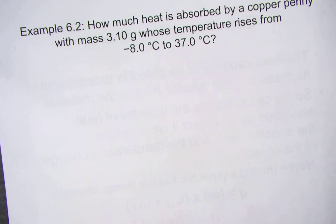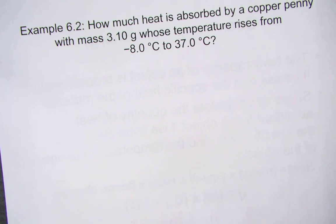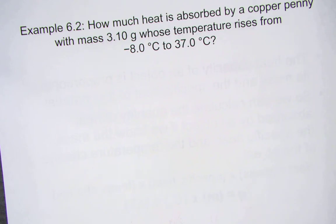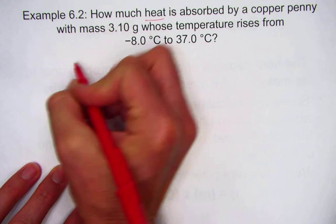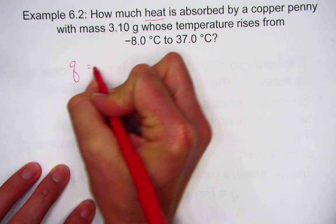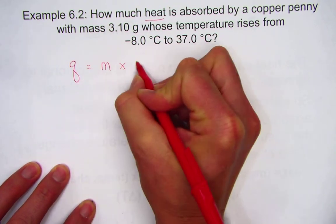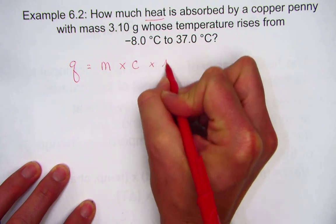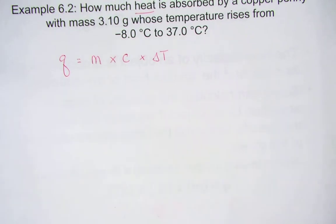Let's take a peek at an example problem. How much heat is absorbed by a copper penny with a mass of 3.1 grams whose temperature rises from negative 8 degrees Celsius all the way to 37 degrees Celsius? We understand that when we're calculating heat energy, that's Q. We need mass times the specific heat constant times the change in temperature.